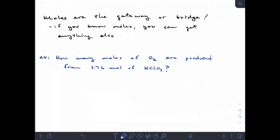Sometimes you may have one path to get to moles, and then you cross the mole bridge, and then you have a different path away from the mole bridge. But the main thing is getting across the bridge. So if you know moles, you can get anything else you want out of that chemical equation. So example problem here.